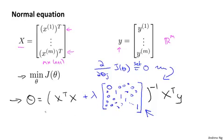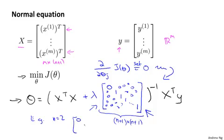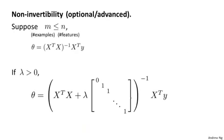As a concrete example, if n equals 2, then this matrix is going to be a 3 by 3 matrix. More generally, this matrix is an n plus 1 by n plus 1 dimensional matrix. So if n equals 2, then that matrix becomes something that looks like this. It would be zero, and then ones on the diagonals, and then zeros on the rest of the off diagonals. And once again, I'm not going to show this derivation, which is frankly somewhat long and involved. But it's possible to prove that if you are using the new definition of J of theta with the regularization objective, then this new formula for theta is the one that would give you the global minimum of J of theta.